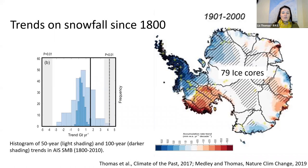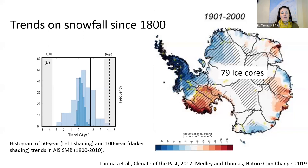As an overview: back in 2017, I compiled all available snow accumulation records from ice cores — 79 different ice cores, shown on the plot as yellow crosses. The background to this study was that there had been an assumption that snowfall and surface mass balance had been relatively stable. What we were able to demonstrate is that that's actually not true, and that across the whole Antarctic ice sheet, there's been a significant increase in snowfall over the last 200 years, particularly during the latter part of the 20th century.